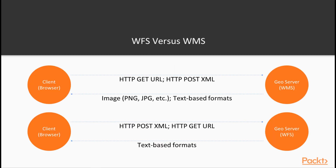While WMS usually provides an image in response to a request, WFS provides parsable feature-level data, usually in a text-based, machine-readable format. A client, such as OpenLayers, reads the response and renders it as directed, usually as a map overlay.